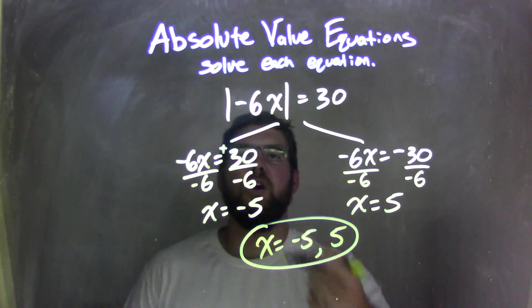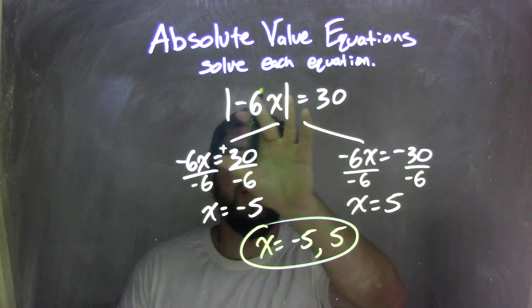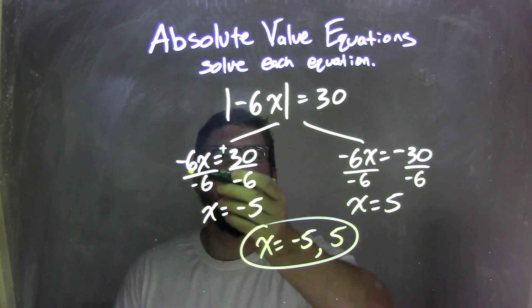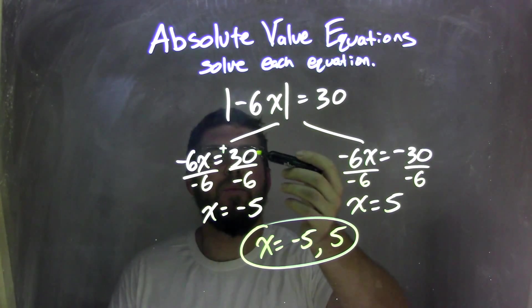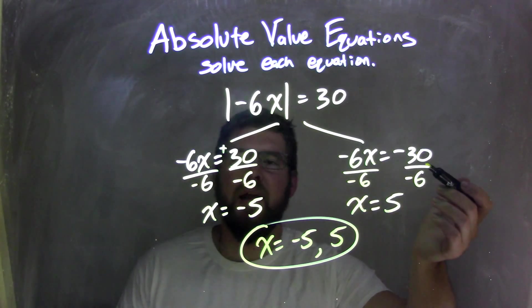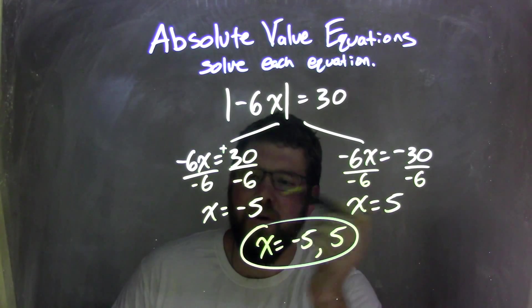So let's recap. We started with the absolute value of negative 6x equals 30. Got rid of the absolute value by separating the equation into two parts. The left-hand side is exactly the same with what's inside the absolute value, but the right side becomes positive 30 and negative 30. I then divide by negative 6 to both sides of both equations,